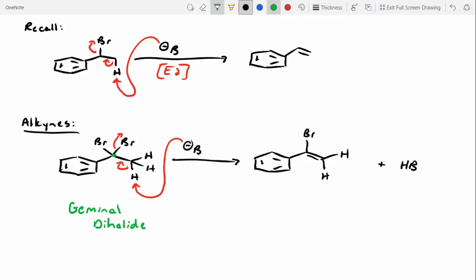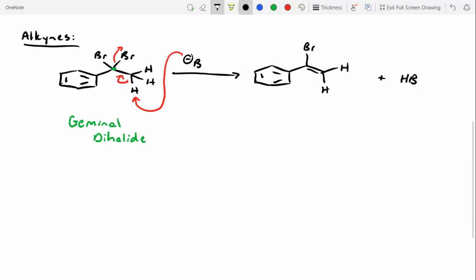What do you think the next step is if we add more base? Yeah, we can do another E2 reaction, just like we saw with alkenes. So we can take a second equivalent of base. We can clamp down, and we can kick off our bromine. Why did I grab that proton and not the one on the top right? Yeah, it still has to be anticoplanar for this to work. And we have that leftover proton. And we've got our conjugate acid.